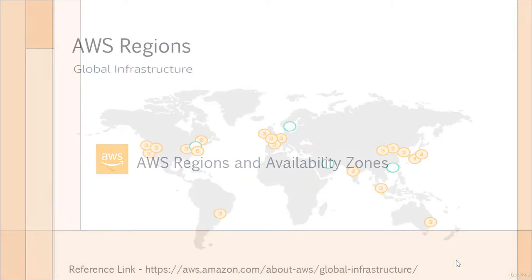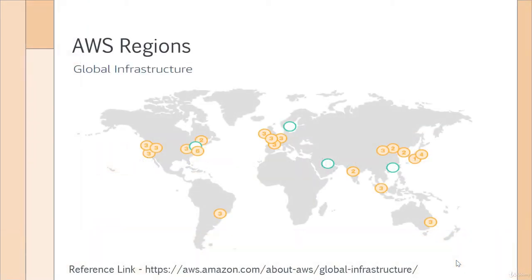Hi and welcome back. Now in this chapter, let's talk about AWS regions and availability zones. This is really important as you move through your journey on the AWS cloud. So if you are planning on proceeding from becoming a cloud practitioner to going on to the AWS associate level, the professional level, or even the specialist exam, this basic understanding of AWS regions and availability zones is very, very important.